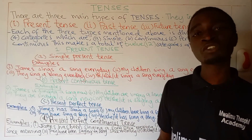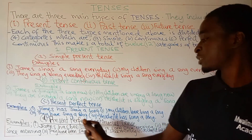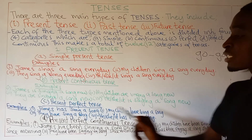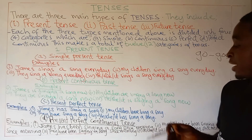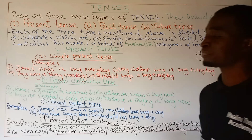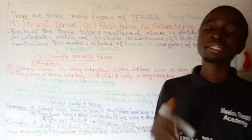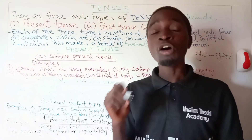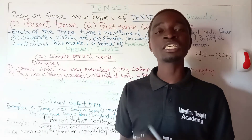We have different examples of sentences which are in present perfect continuous tense, as you see here. Number one: James has been singing a song since the morning. Number two: my children have been singing a song since the morning. Number three: they have been singing a song since the morning. Number four: he or she or it has been singing a song since the morning. Any sentence in present perfect continuous tense should have has been or have been, each followed by the main verb ending with -ing.